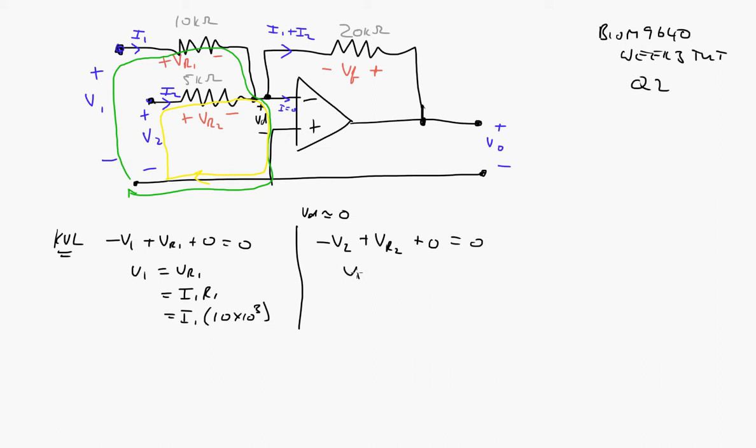So again, we get V2 this time. V2 equals VR2, which equals I2 times R2, which equals I2 times 5 kilo-ohms, so I2 times 5×10³.